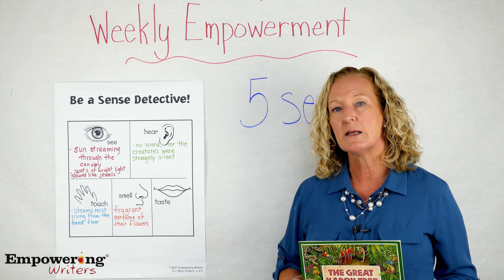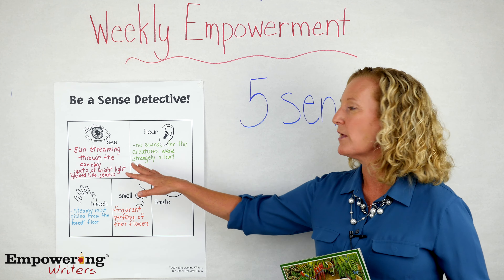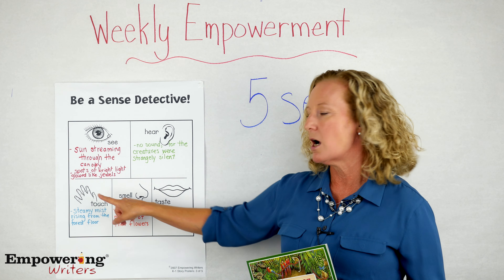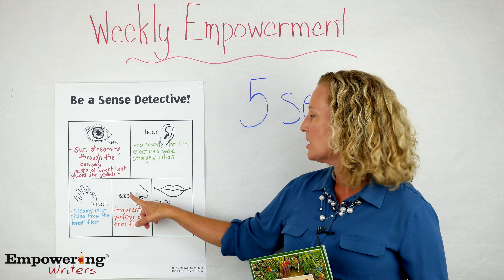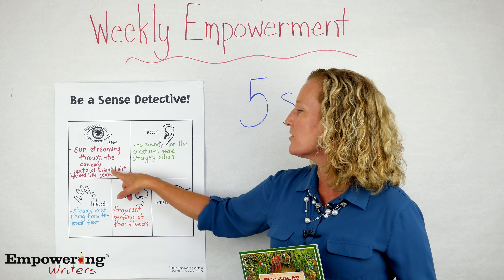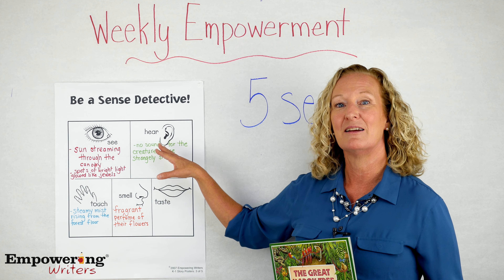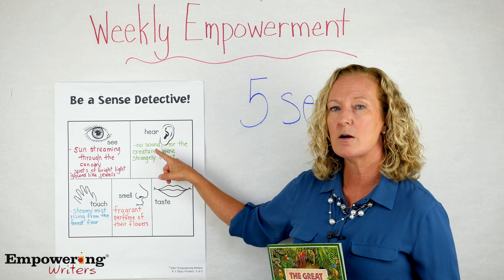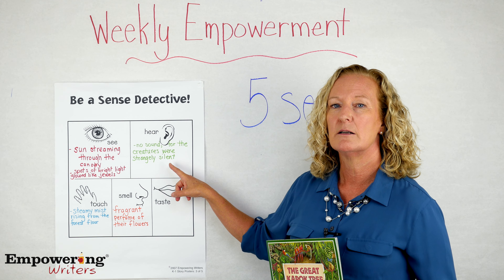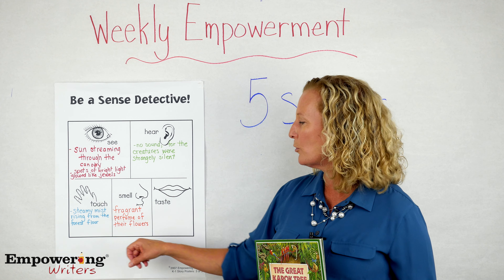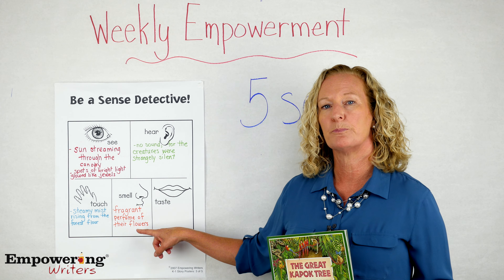Once I've read that and we understand the power of the five senses, I want to break it down for my students — first as a reader, then as a writer. I take that very same sensory segment and create a sensory chart. I have one pre-created here: an eyeball for things we would see, then hear, touch, smell, and taste. Breaking it down: 'The sun streaming through the canopy' — something we see. 'Spots of bright light glowed like jewels' — another. For hearing: we heard no sound — the creatures were strangely silent. Silence is an incredible sound. For touch: steamy mist rising from the forest floor. For smell: the fragrant perfume of their flowers.